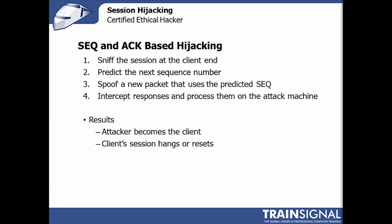A similar type of attack that requires a bit more pre-work is hijacking based on sequence and ACK numbers — actually being able to predict and calculate those. They almost always require you to do some type of network sniffing on the session at the client end to figure out what the SEQ and ACK numbers are, where they're going, how far they're incrementing. Then you jump into the middle by crafting special IP packets that use the correct SEQ and ACK numbers to convince the server that you are the client. It also requires you to potentially block incoming traffic from the server to the client — relatively hard to engineer, but an interesting attack in theory.